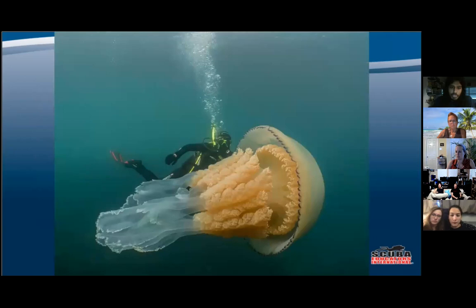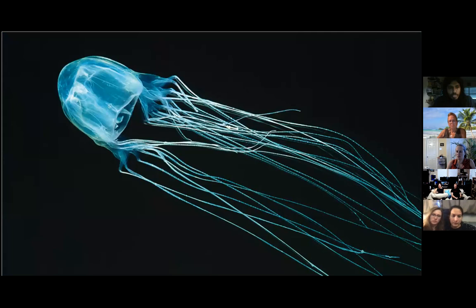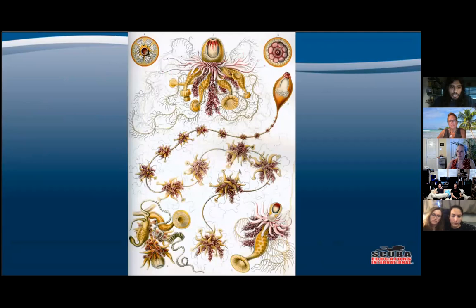Here we have jellyfish, just showing you how large they can get — and this isn't even the largest species. Here's a sea wasp, which is a type of box jellyfish. And then Hydrozoa, which as I mentioned are colonial living — a bunch of different cells that have individual purposes.